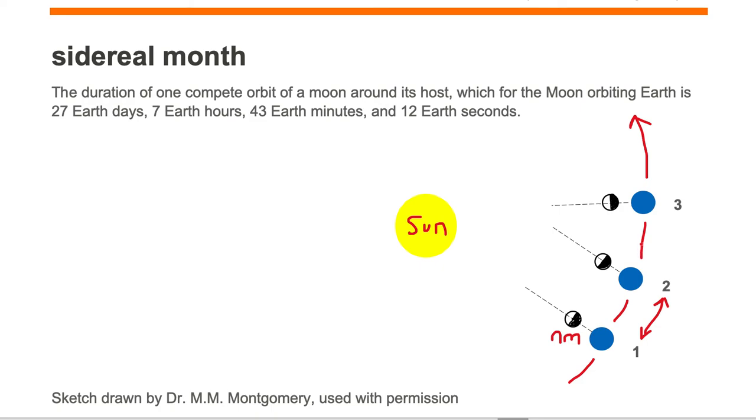The Earth would have to move a little bit more in its orbit to have the line passing from the Earth through the moon to point towards the sun. So position three is the next new moon phase, which is a little bit longer by about two more days than a sidereal month.